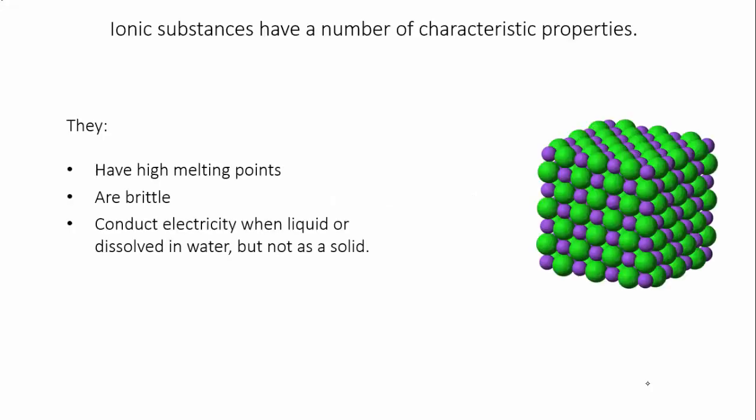Ionic substances have a number of characteristic properties that's due to their bonding. They have high melting points, they tend to be brittle, and they conduct electricity when they're a liquid or when they're dissolved in water, but not when they're solids.